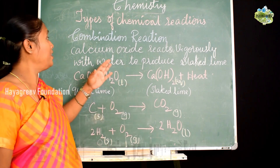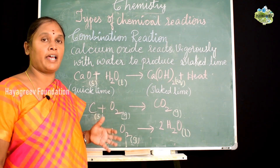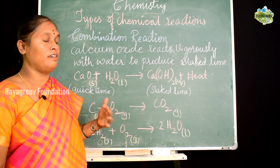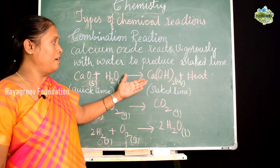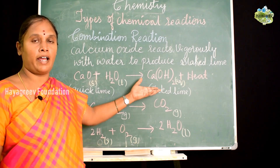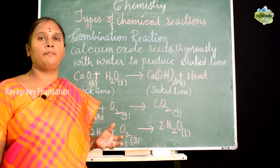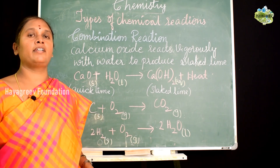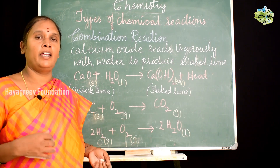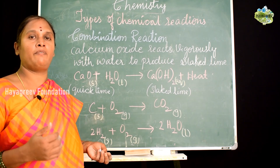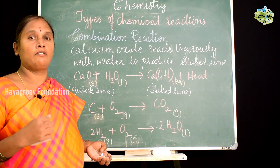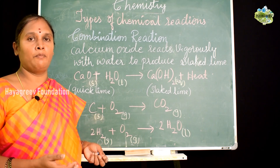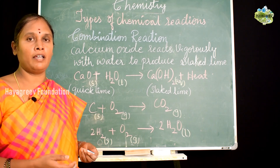In combination reactions, some reactions liberate heat. Chemical reactions which involve liberation of heat are termed exothermic reactions. An exothermic reaction is a chemical reaction in which heat is liberated. There are also some reactions which absorb heat — those are called endothermic reactions.